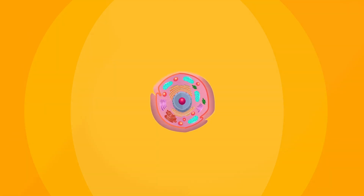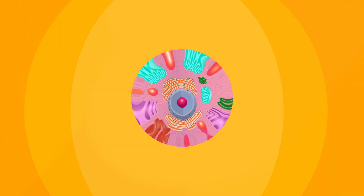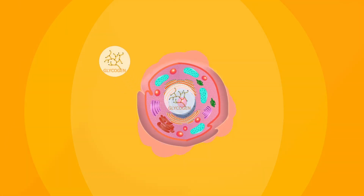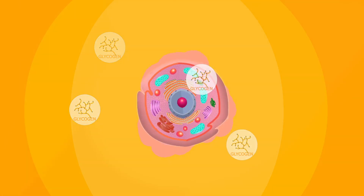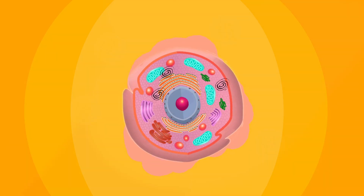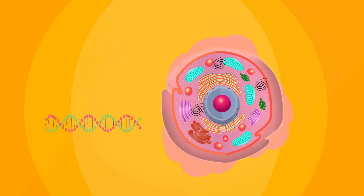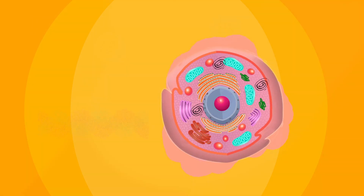Along these changes also come alterations in the structure of the cell, which includes cellular swelling, blebbing of the membranes, loss of glycogen particles, formation of myelin figures, nuclear membrane changes, and DNA damage.